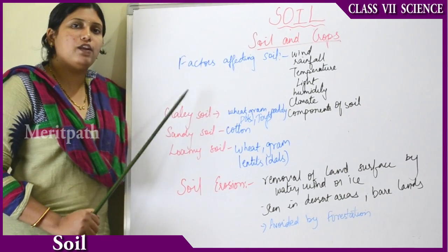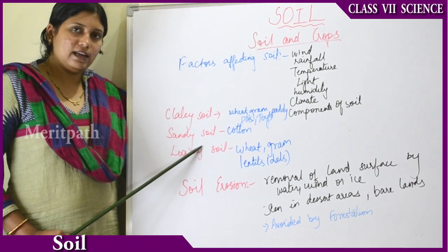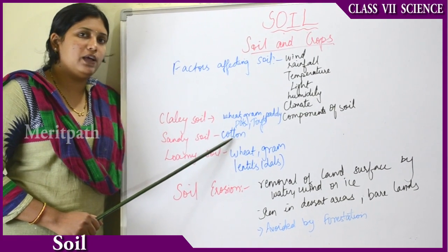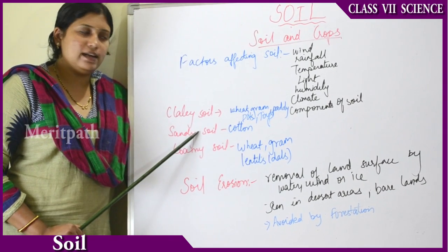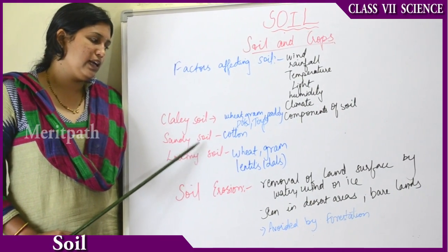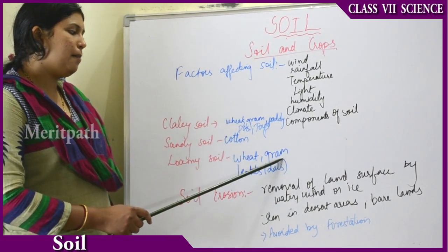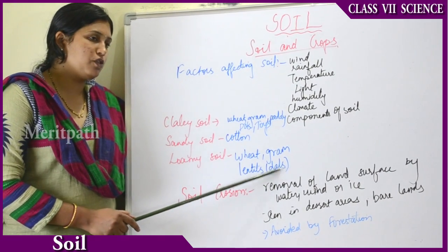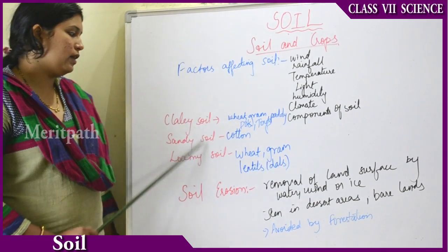Clay soil is the most beneficial type of soil because it has good water holding capacity. In loamy soils, which are a mixture of sandy and clay soil and also have good water holding capacity, wheat, gram, and lentils (such as masoor dal and urad dal) can be grown. These are the different types of crops which grow in different types of soils.